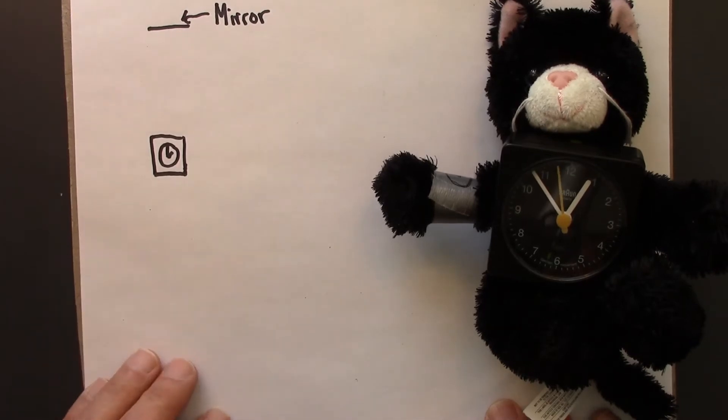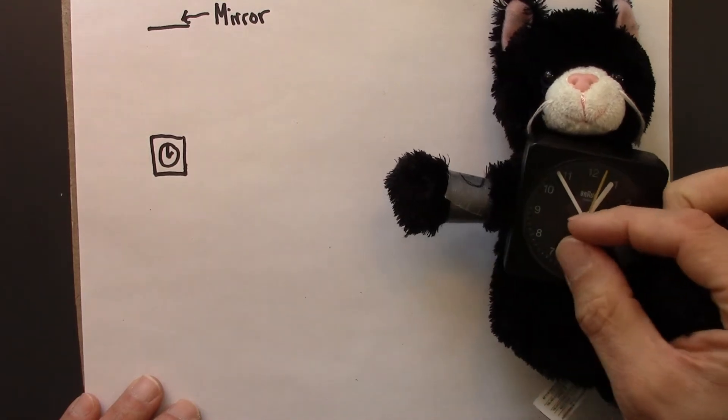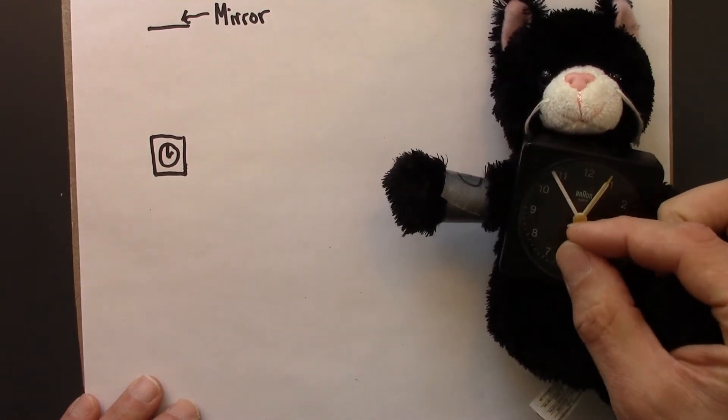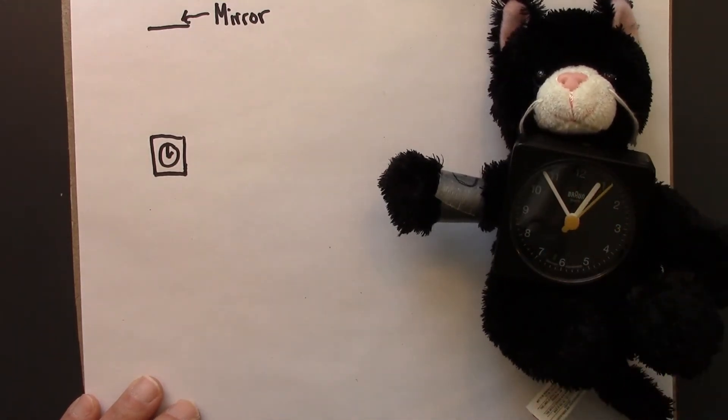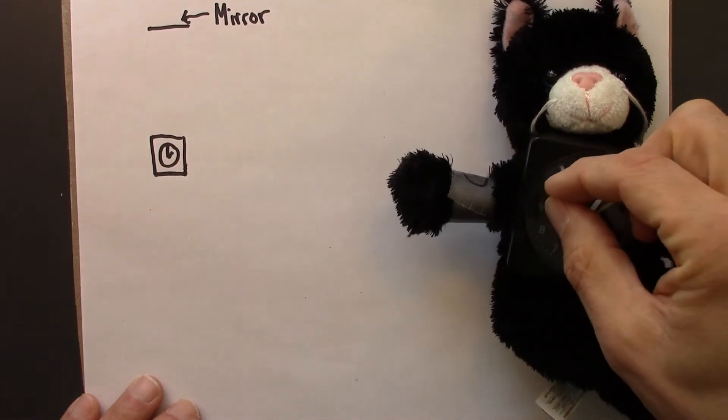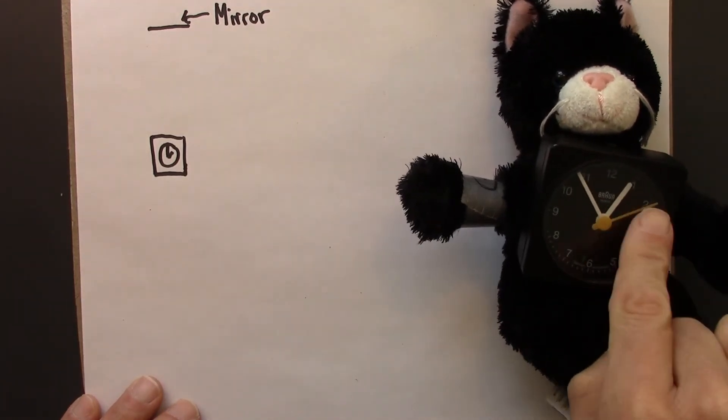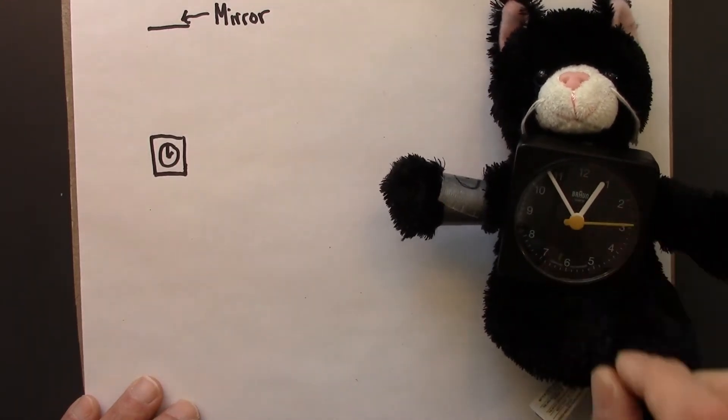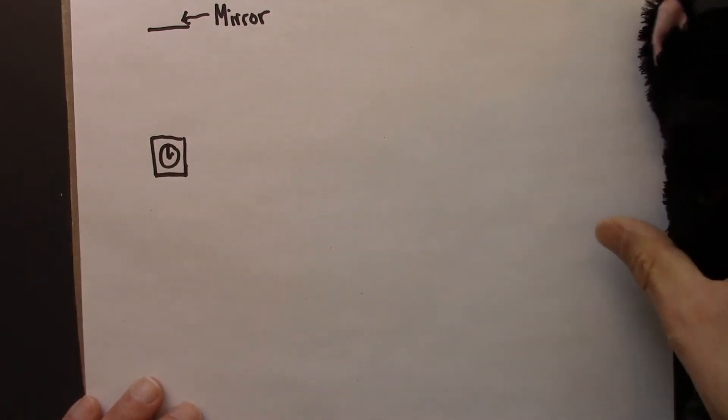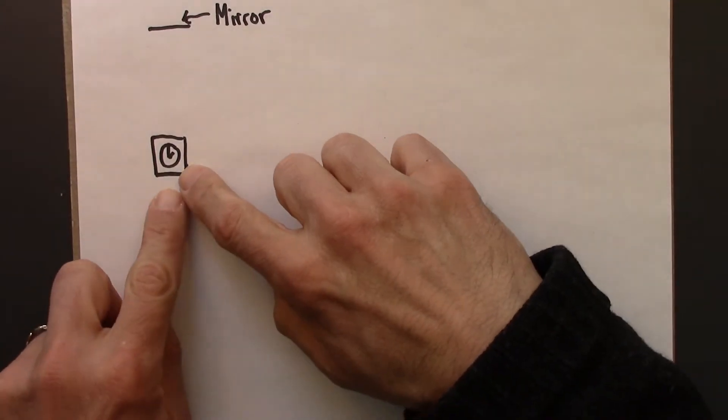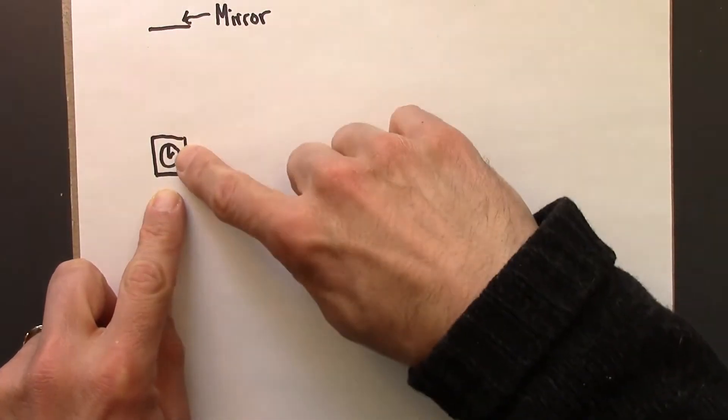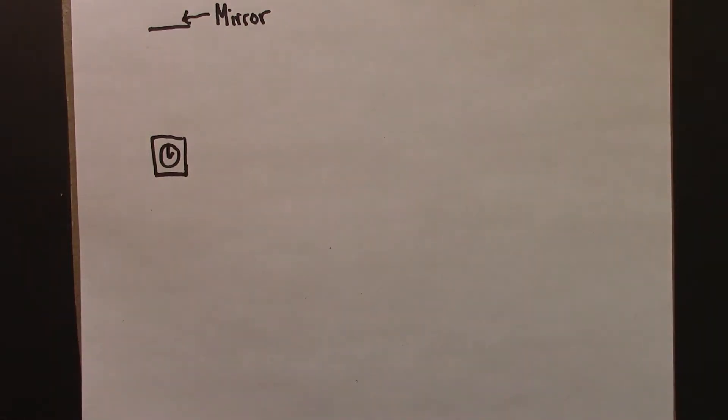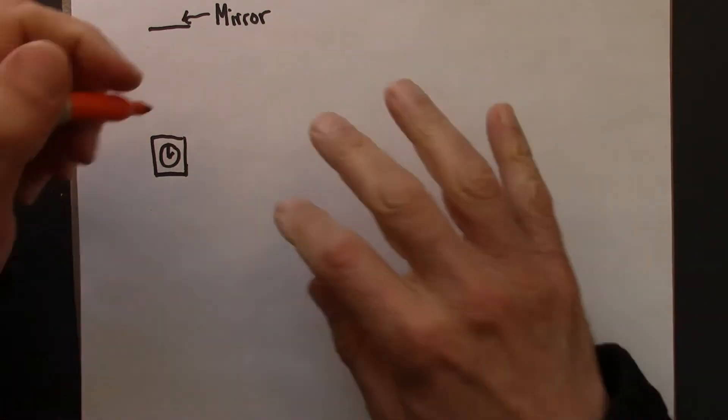We'll start by analyzing the situation in Beowulf's frame. Beowulf is at rest. He emits a flash of light, up it goes, it hits a mirror, bounces back, hits him again, and he records how much time that took. The time that it leaves and the time that it returns. So here's a little drawing for that.